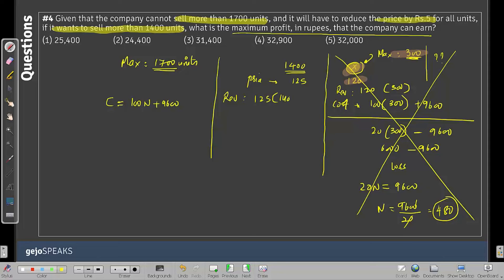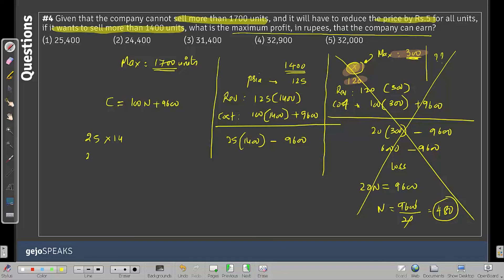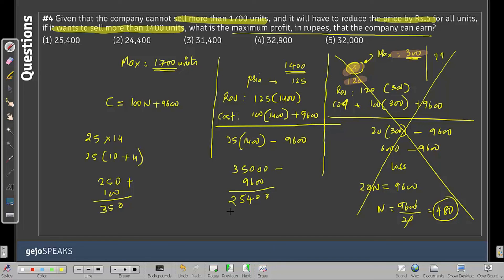Maximize profit by selling exactly 1400 units at 125 per unit. Revenue = 125 × 1400; Cost = 100 × 1400 + 9600. Profit = 25 × 1400 − 9600 = 35,000 − 9600 = 25,400 rupees. That's the maximum profit, corresponding to answer choice 1.